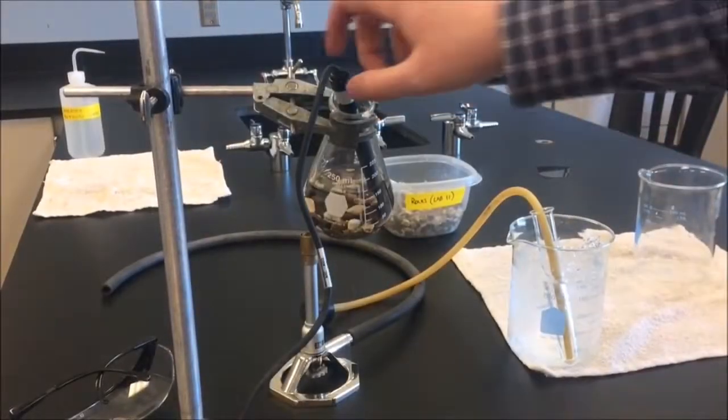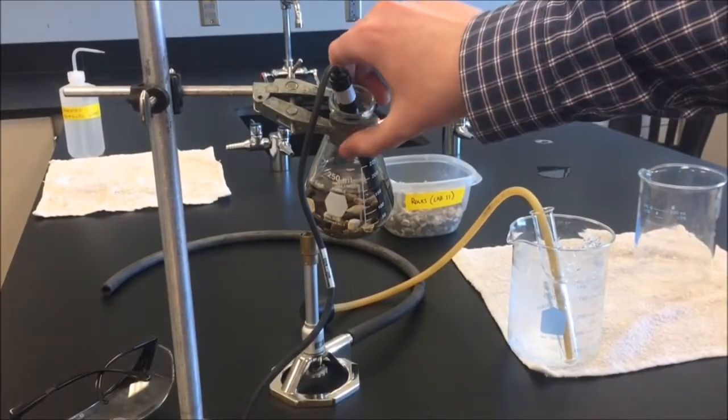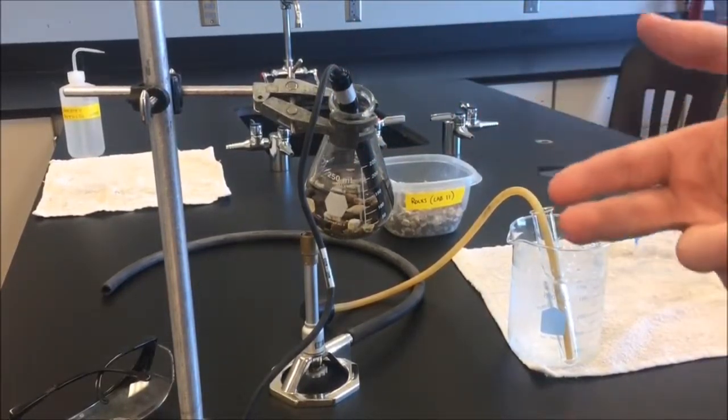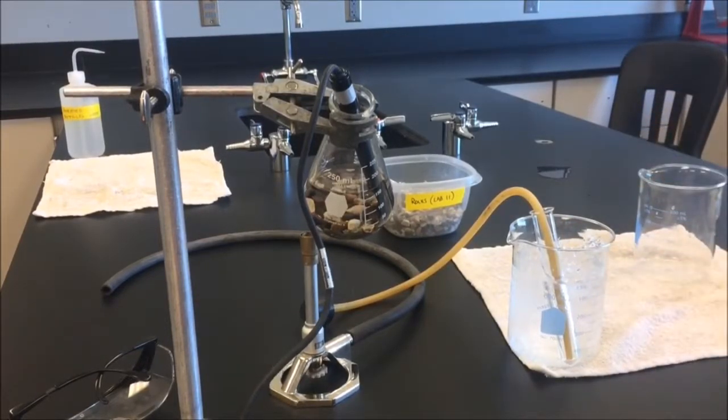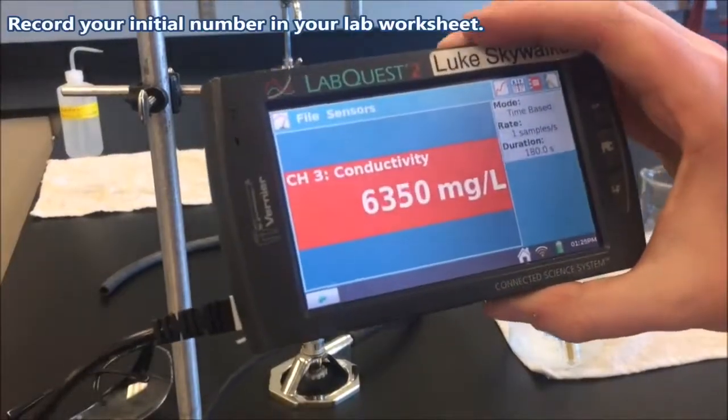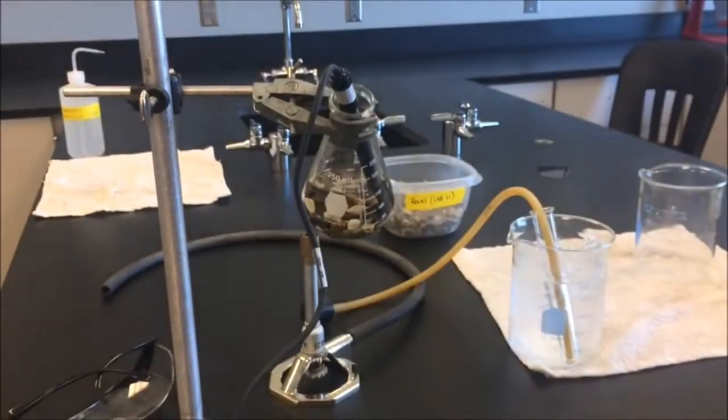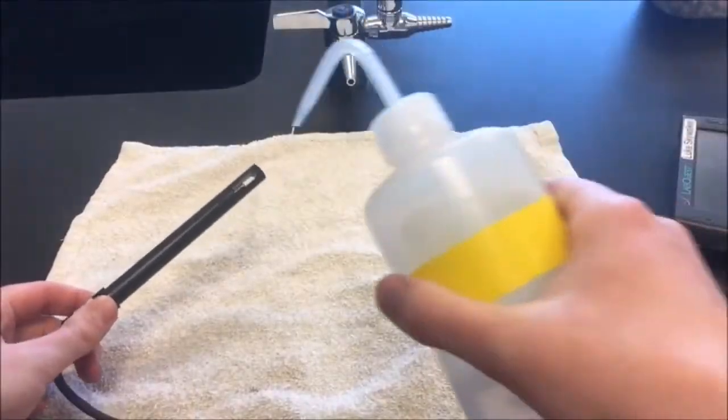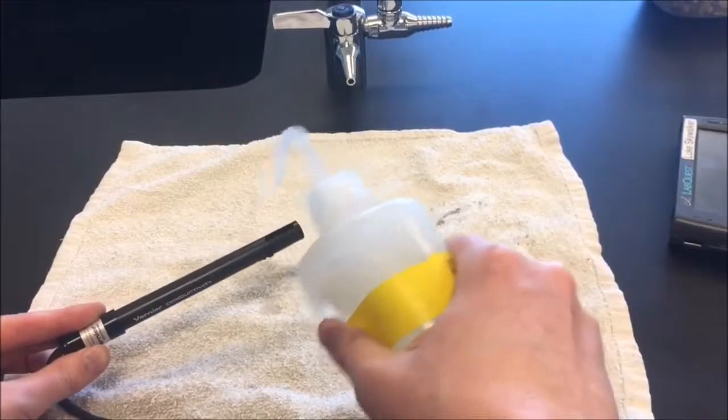So place the conductivity probe into your Erlenmeyer flask. I had to tilt it a little bit so that I could get my entire sensor under the water. So if you need to do that, do that. You should be getting a number on your probe somewhere in the 6,000 to 8,000 range. And again, let's spray off our conductivity probe with some distilled water.